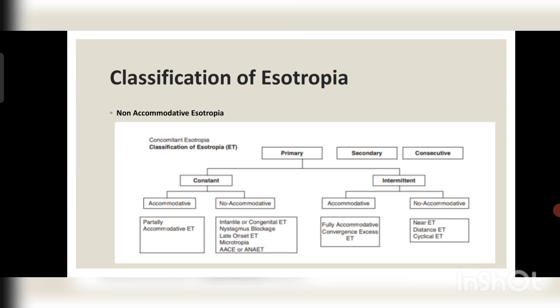The classification of esotropia is very important. Primarily, esotropia is classified into primary, secondary, and consecutive types. Primary esotropia is what we commonly see. Secondary esotropia is secondary to some cause. Consecutive esotropia means after surgery — for example, if a child was having an exotropia and after surgery was over-corrected and got a consecutive esotropia.